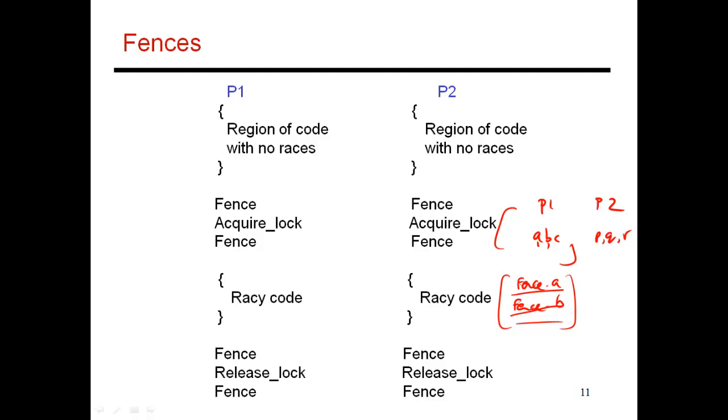Here's an alternative way to implement this. So once I identify my racy code, instead of marking each of those instructions as a fence instruction, I could say that let me acquire a lock, which makes sure that I'm the only one that gets in over here.